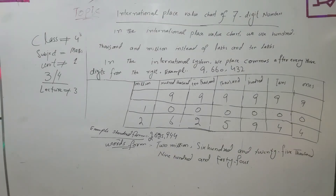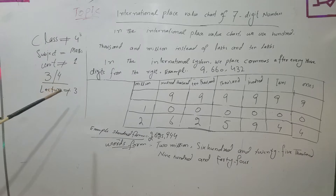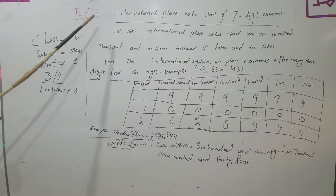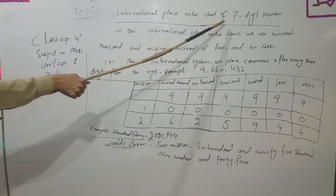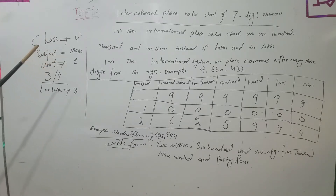Bismillah ar-Rahman ar-Rahim. Dear students, Assalamu alaikum. Today's topic is the 4th Class Pakistani Place Value Chart of 7-digit numbers. We will also cover the International Place Value Chart of 7-digit numbers. First we will review the Pakistani Place Value Chart, then move on to the International Place Value Chart.